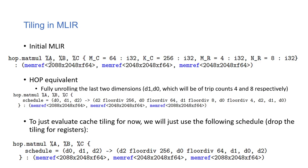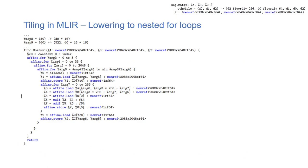Here's the original matrix multiplication. You have the algorithm expressed as a high-level operation, and then you have the schedule that maps from the induction variables. With three dimensions, you do tiling and loop interchange — changing the order of induction variables — to break down the computation. Taking the operator and the schedule, you lower to create the nested for-loop, and you can see how the 256 division appears in the generated code.